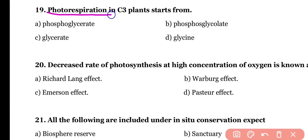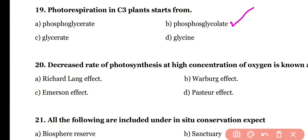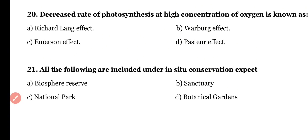Question number nineteen: photorespiration in C3 plants starts from (a) phosphoglycerate, (b) phosphoglycolate, (c) glycerate, or (d) glycine. The correct answer is option B — in C3 plants, photorespiration starts with the formation of 2-carbon compound phosphoglycolate.